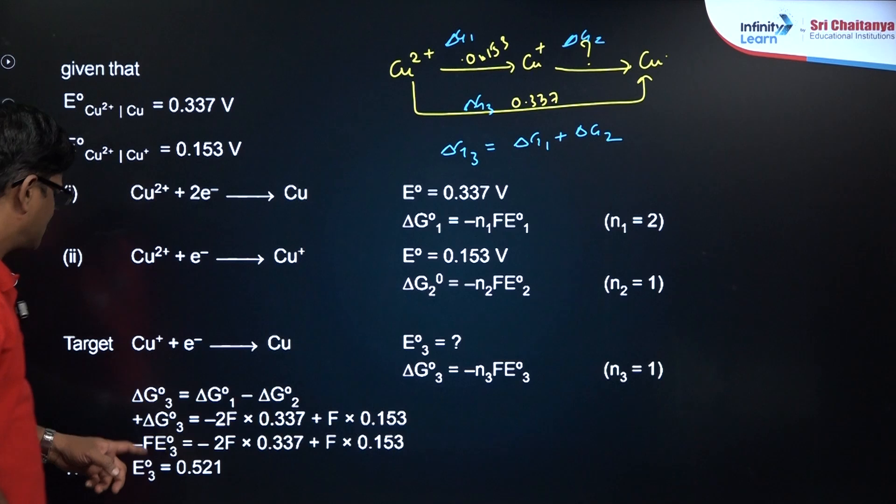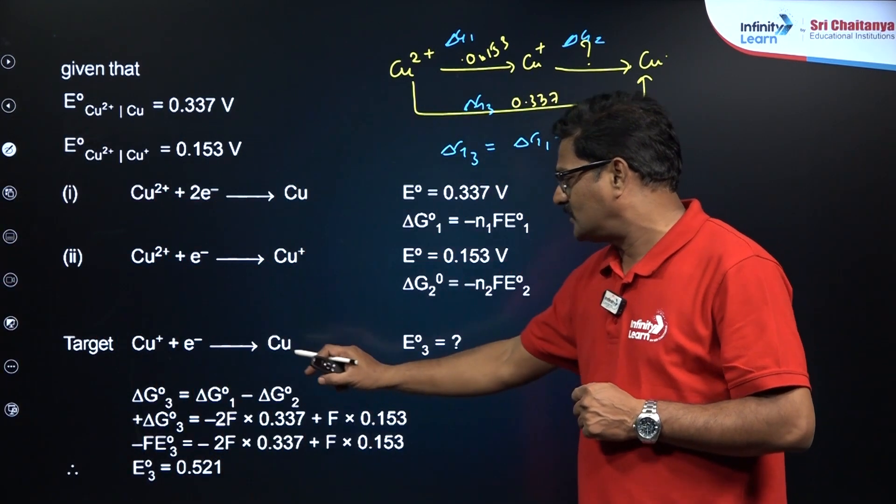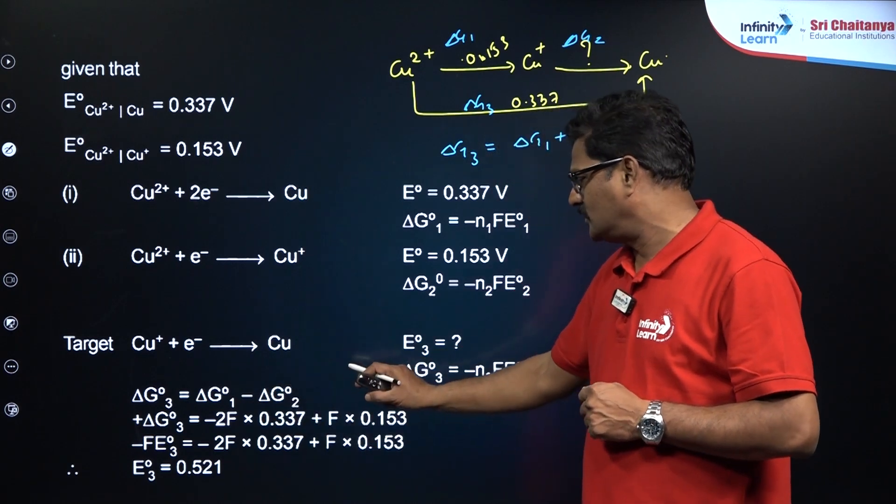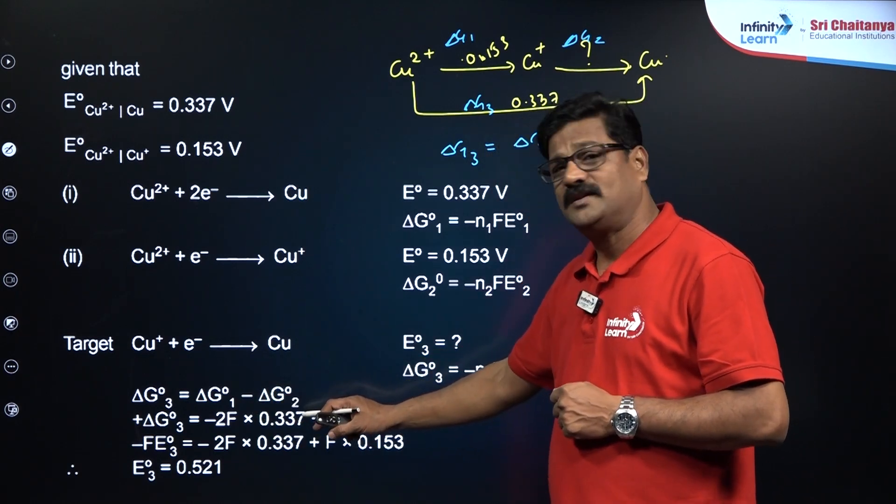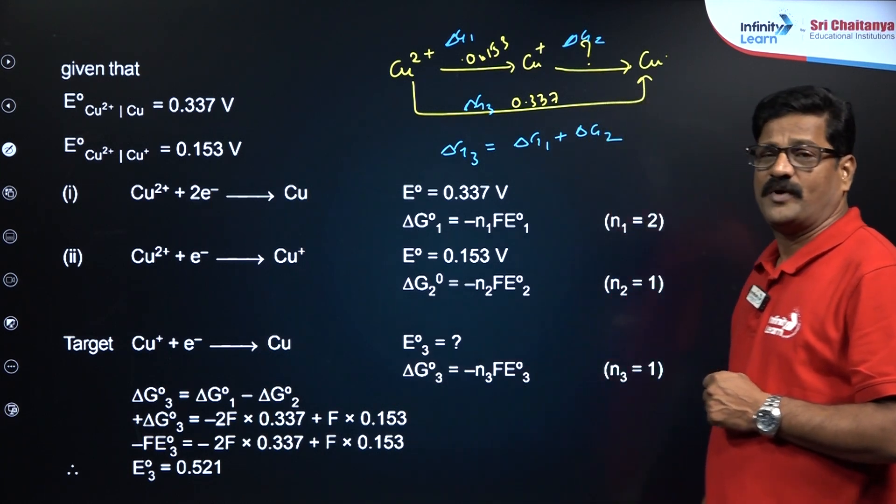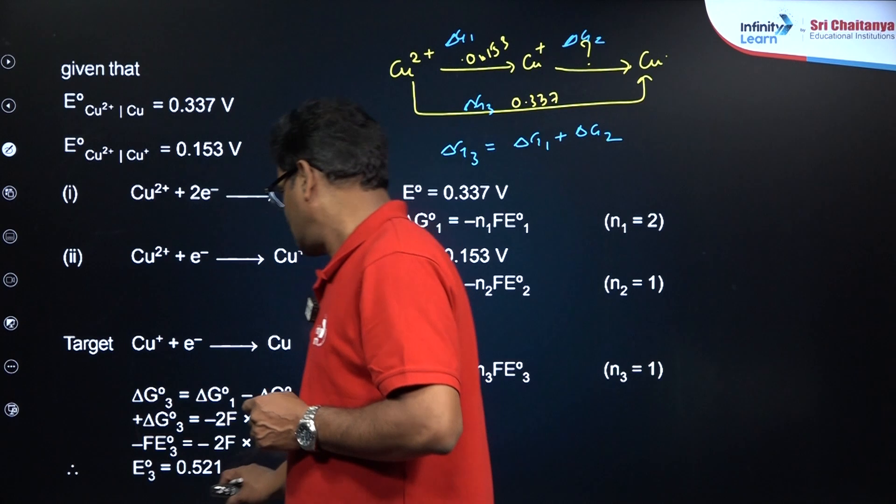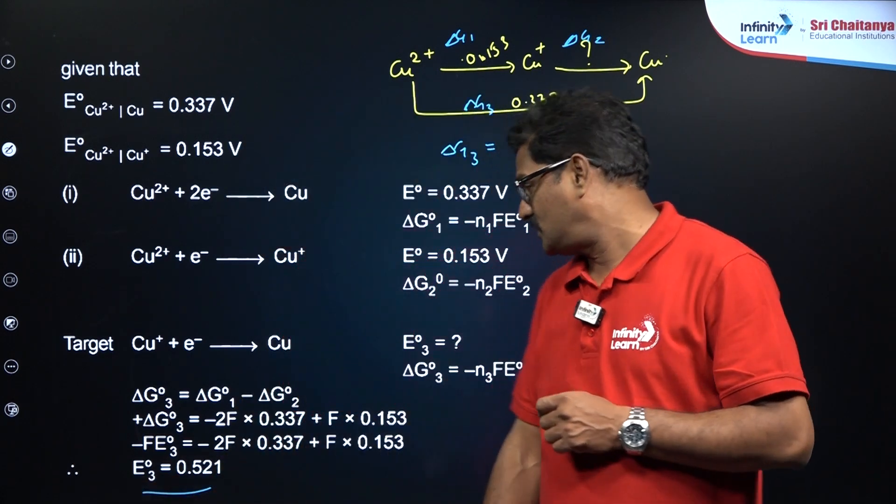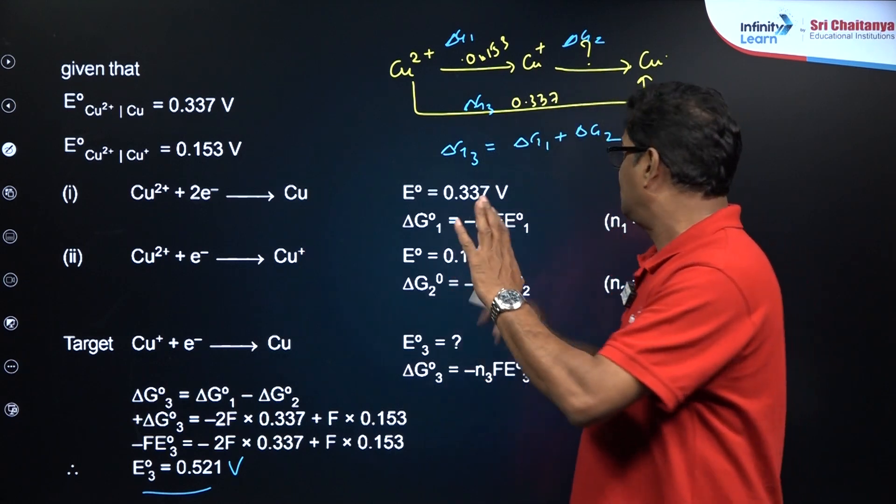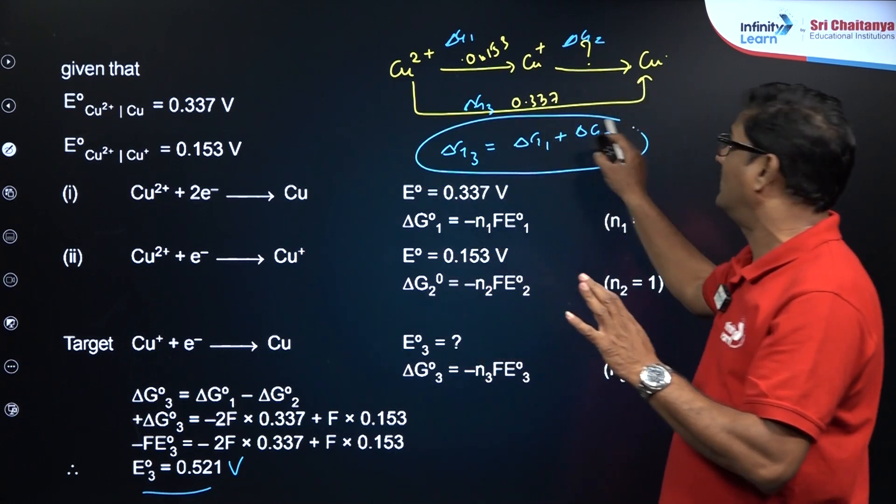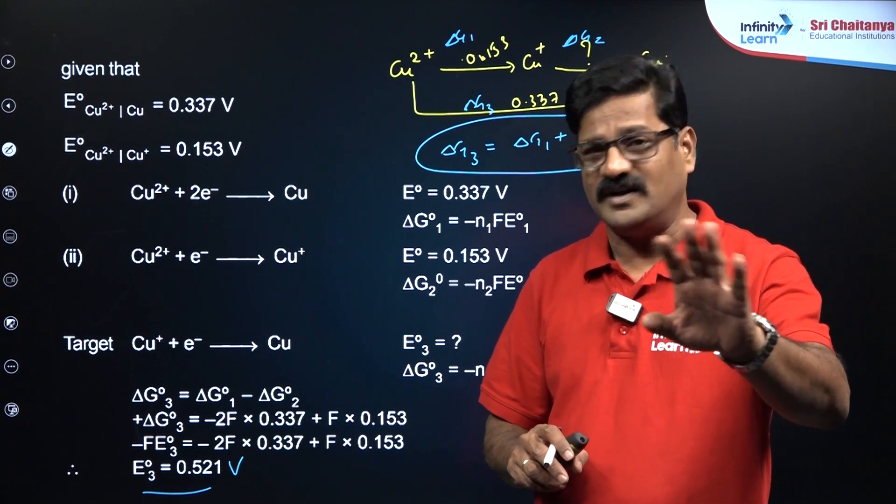Delta G3 can be equated to delta G1 plus delta G2. Based on that, you can say delta G3 equals delta G1 minus delta G2. Taking 2 electrons over here, taking 1 electron over here, F is getting cancelled, and 0.337 is multiplied with 2 plus 0.153 is added. On doing so, this is going to be 0.521 volts is the answer for this kind of question. Based on this formula, you do expect a question from the NEET examination.